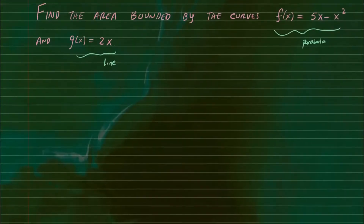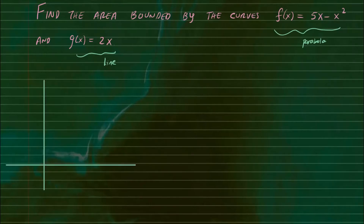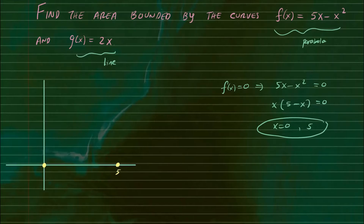Let's go ahead and graph these functions. Graphing is not necessary, but it is nice to have an idea how the graph looks like. So here's our x-y plane, and we want to graph f and g. To find the x-intercepts for f of x, we set f of x to zero: 5x minus x squared equals zero. Factor out an x, you get x times 5 minus x equals zero, which means x equals zero and x equals 5. So the parabola goes through those intercepts, facing downward.